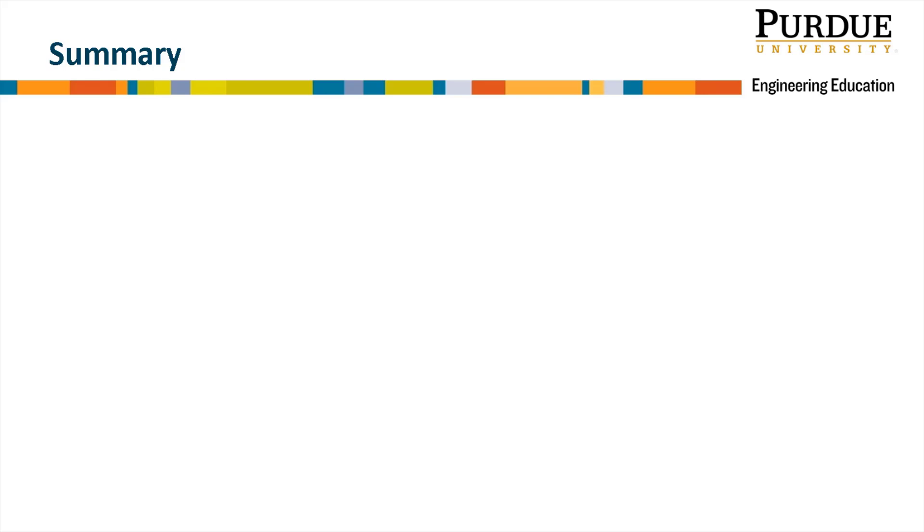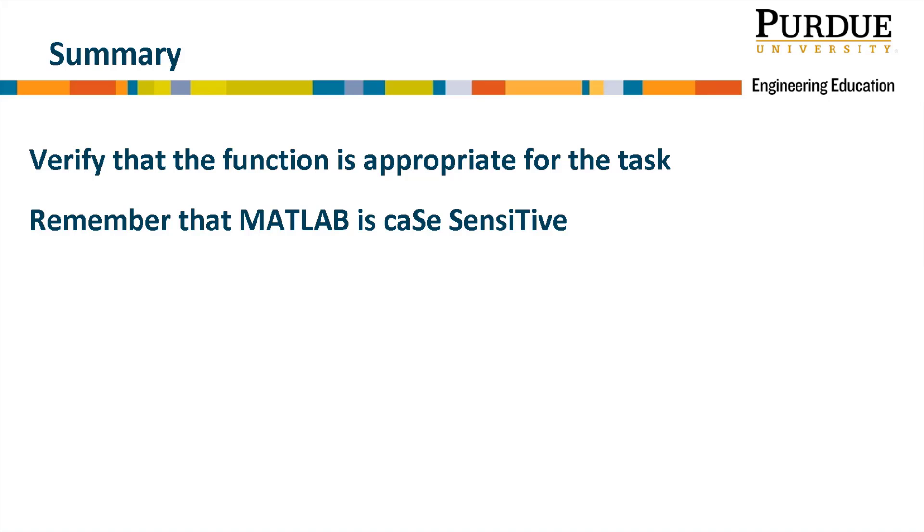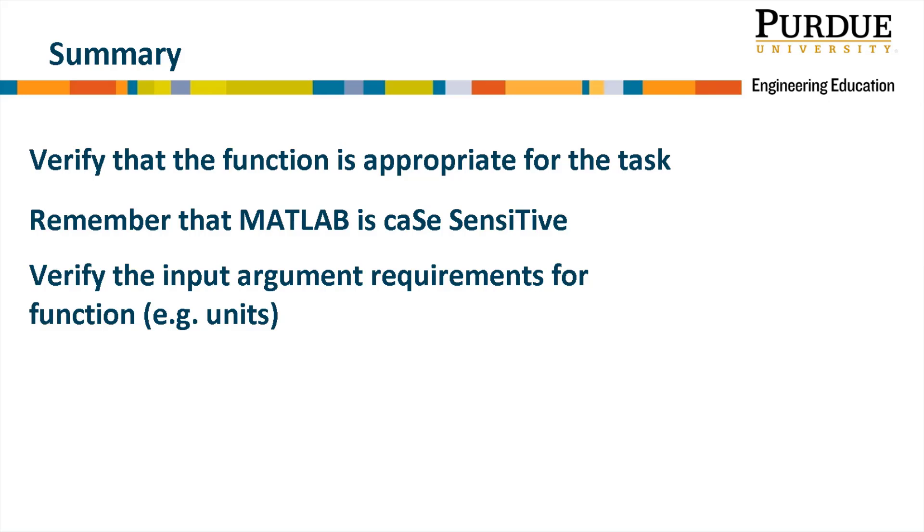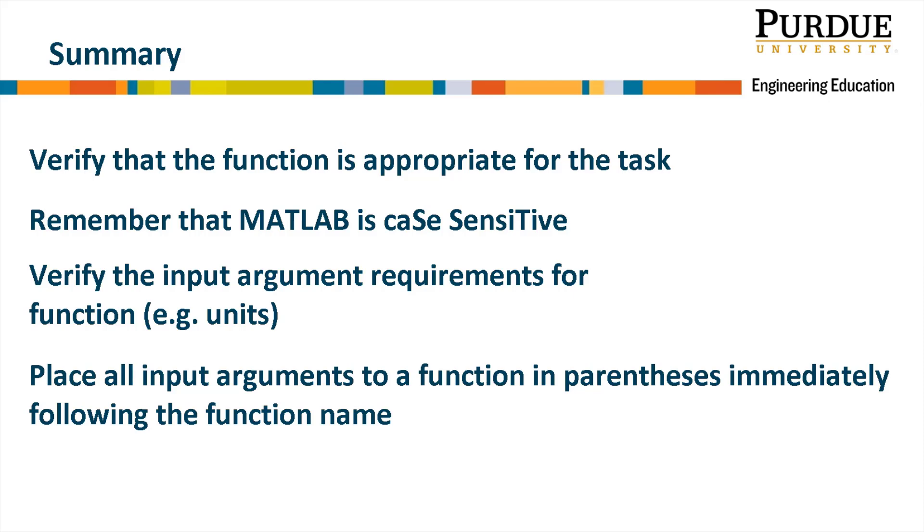Let's go over a brief summary of what we learned in this module. We have to verify that the built-in function we select is appropriate for the task. We have to remember that MATLAB is case sensitive. We have to verify the input argument requirements for the functions. For example, you need to ensure the units of the input arguments match what the function is expecting. When using a built-in function, we have to place all the input arguments in parentheses immediately following the function name. And finally, we have to be aware of potential limitations of a given function. Use the help command to learn about the different functions.